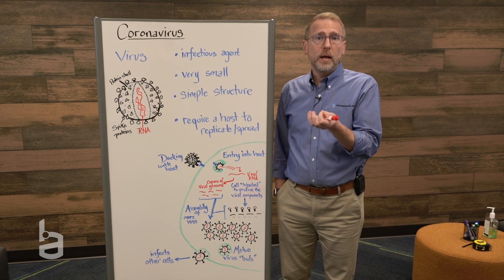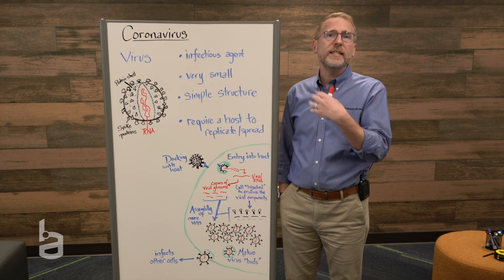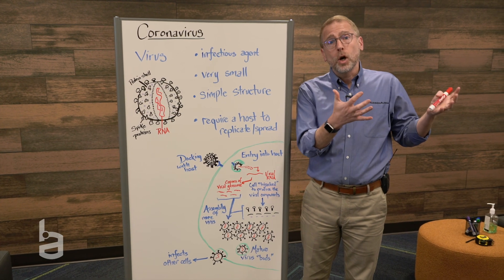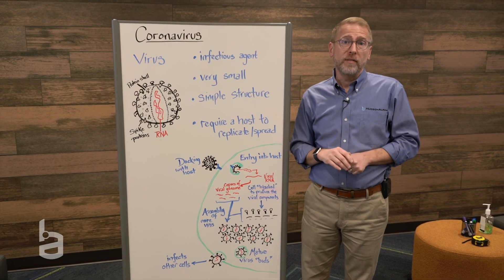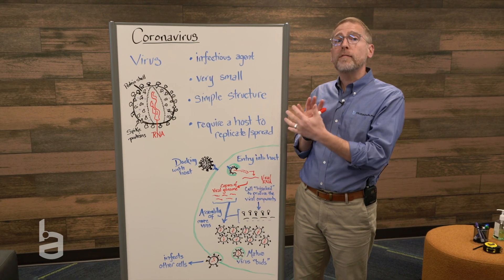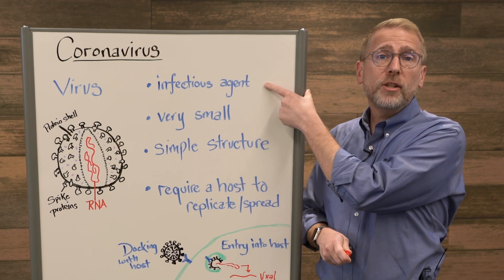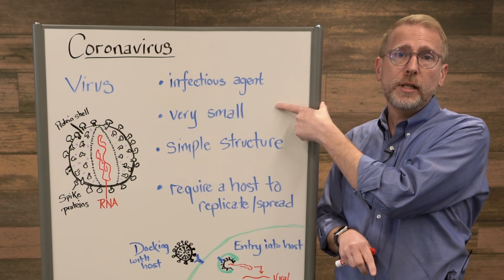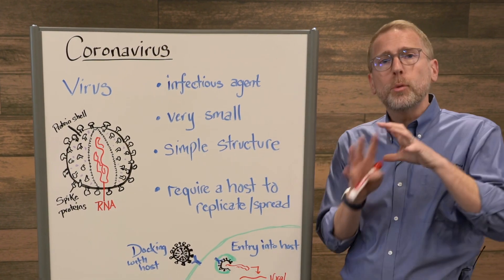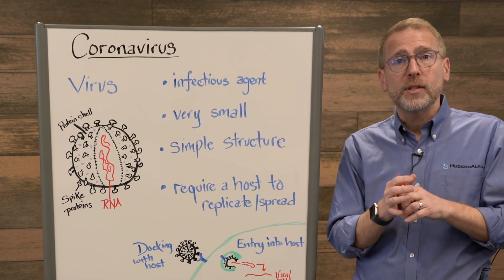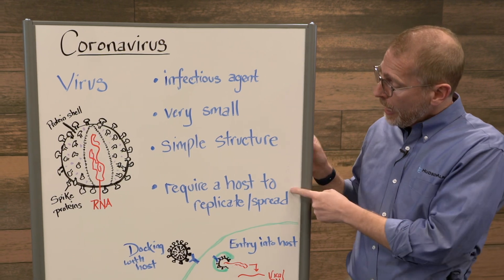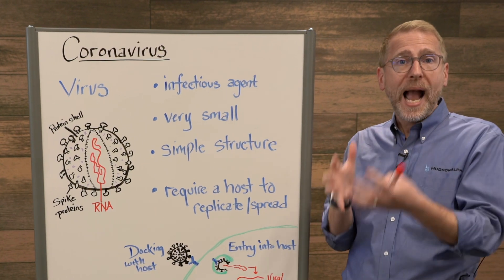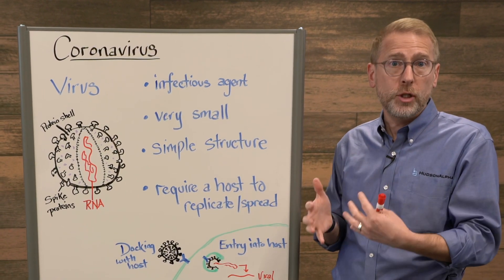Coronaviruses are a family of viruses. There are lots of different types of viruses in general. Influenza viruses that cause the common flu, adenoviruses that are one of the causes of common colds, and coronavirus. In order to talk about coronavirus, let's pull back and talk about viruses in general. Viruses are infectious agents. They cause infectious disease. They're incredibly small, much smaller than bacteria. You have to see them with a microscope. They have a really simple structure, both the outside of the virus and the genetic material that's on the inside. And they require a host in order to replicate. So they are non-living. On their own, they can't reproduce. They have to infect another cell in order to do that.